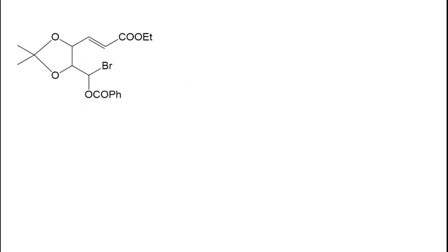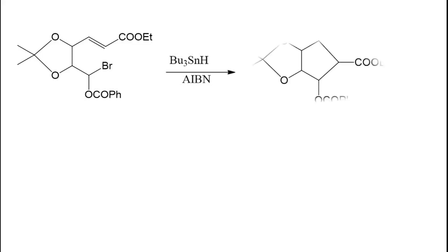Next, let us take another reactant. This on cyclisation gives the product by a similar mechanism; you will get a 5-membered cyclic ring. This will be the product — you try the mechanism by yourself.